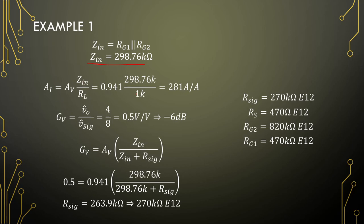The current gain with this input impedance and the load is 281 A/A — a lot of current gain. GV is V_out / V_sig, so we should be getting 4 V / 8.5 V, which is approximately −6 dB. Calculating GV: AV × (Z_in / (Z_in + R_sig)) gives a signal resistor of 270 kΩ. So if we want to insert an 8 V peak and get out a 4 V peak, we need a 270 kΩ signal resistor.